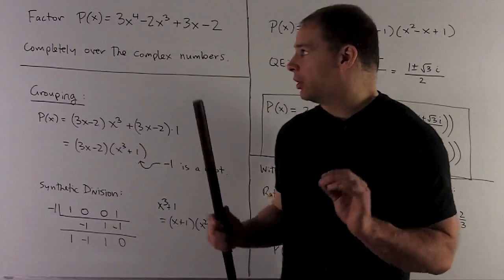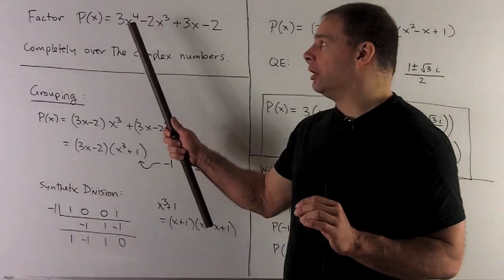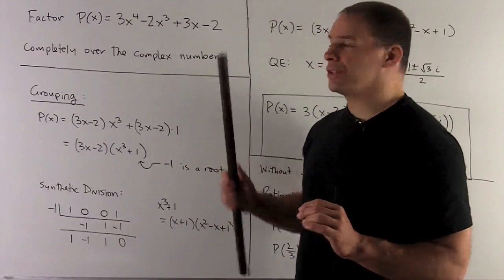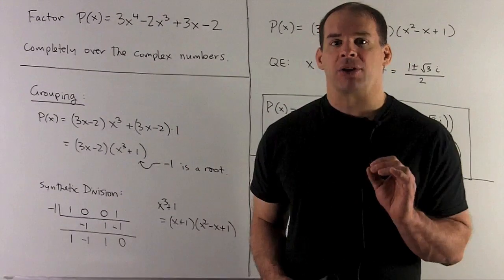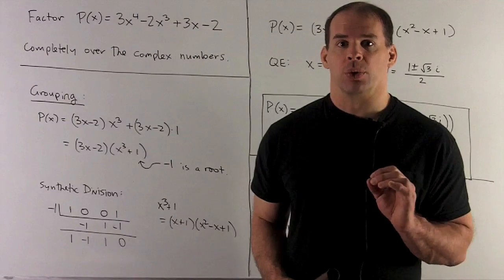If we take a look at our polynomial, there's a pattern: 3 minus 2, 3 minus 2. So we're going to try to factor out 3x minus 2 from each of those groups.